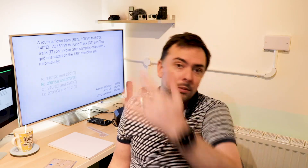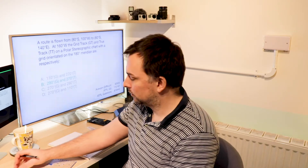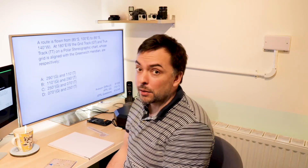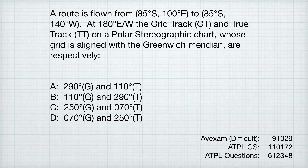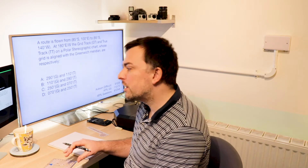Let's take a look at one more — this will be the last one, and then you'll be a polar king. If you've got any questions that don't make sense, let me know and we'll tackle them. Last question — it's very similar. A route is flown from 85 south, 100 east to 85 south, 140 west. At 180 degrees east-west, the grid track and true track are what? And this is for a grid aligned with the Greenwich Meridian. This one is also taken from AVEXAM's difficult questions list.